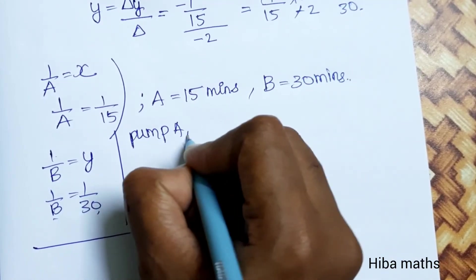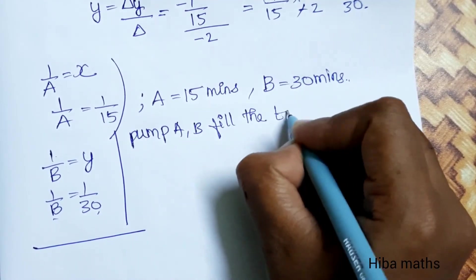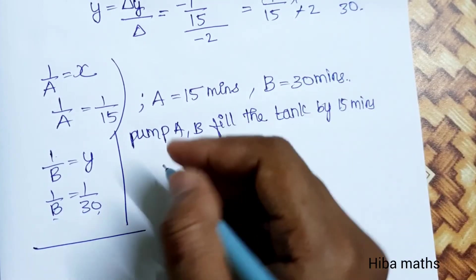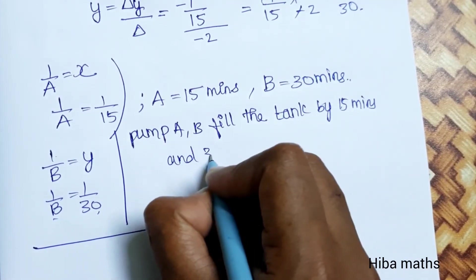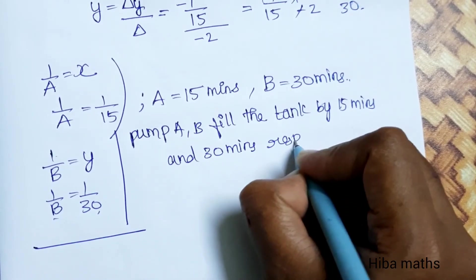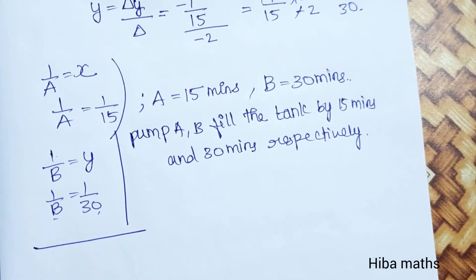Now we have the answer. Pump A and pump B fill the tank in 15 minutes and 30 minutes respectively. Hope this is easy to understand. Thank you so much for watching.